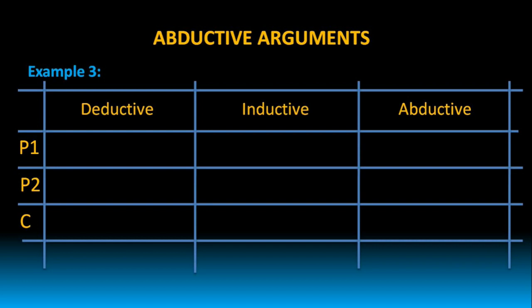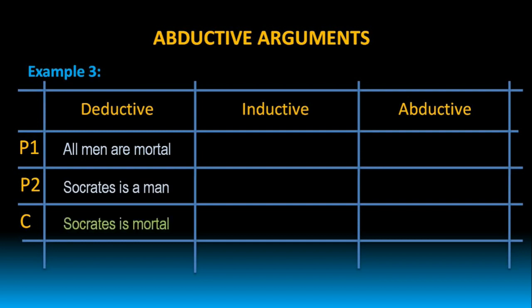First let us observe deductive arguments. All men are mortal. Socrates is a man. Therefore, Socrates is mortal. In this deductive argument, the conclusion can be logically inferred from the given two premises, hence the conclusion is always true. That is why deductive arguments are called valid arguments. When we analyze the reasoning process, it moves from general case to specific case. Premise 1 — all men are mortal — is a general case. Premise 2 — Socrates is a man — is a specific case. And the conclusion — Socrates is mortal — is also a specific case.